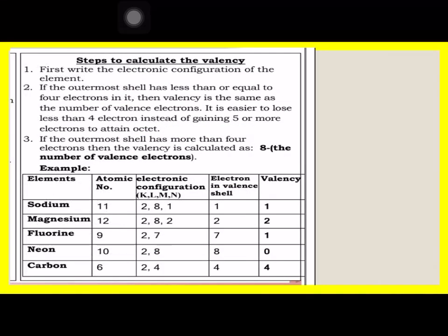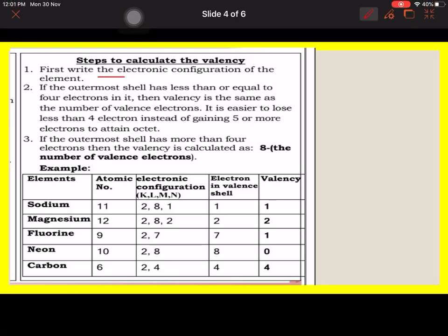Steps to calculate the valency. First, write the electronic configuration of the element. If the outermost shell has less than or equal to 4 electrons in their valence shell, the same number of valency electrons is easier to lose than 4 electrons instead of gaining 5 or more electrons.